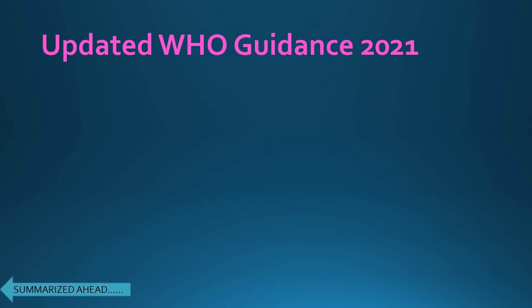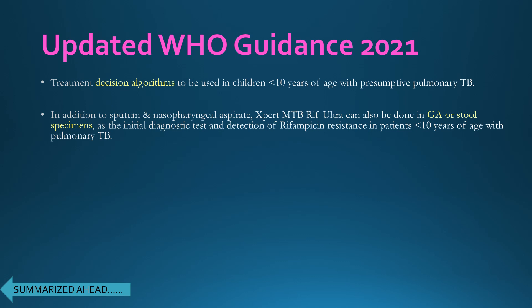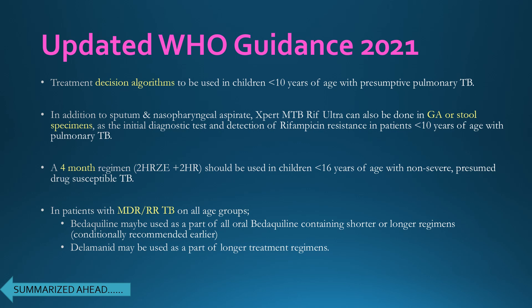A WHO guidance document on management of tuberculosis in children and adolescents has been released this year. As per this document, treatment decision algorithms should be used for children under 10 years with presumptive pulmonary TB. In addition to sputum, nasopharyngeal aspirate, gastric aspirate, and stool specimens can be used with Xpert MTB/RIF Ultra. A four-month regimen (2HRZD + 2HR) should be used in children under 16 with non-severe presumed drug-susceptible TB. Bedaquiline can be used in MDR or rifampicin-resistant TB, and delamanid can be part of longer regimens.